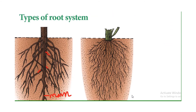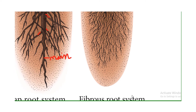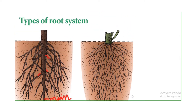There are two types of root systems: the tap root system and the adventitious or fibrous root system. In the tap root system, the first radical forms the main root, also called the primary root. From this main root, lateral branches arise — these are secondary roots, which then branch further.